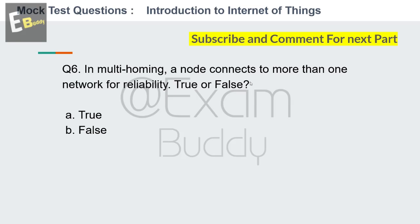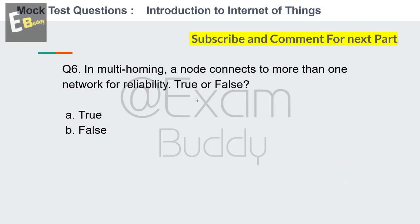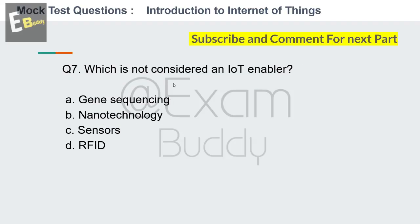Question number six: in multi-homing, a node connects to more than one network for reliability — true or false? The answer is true.